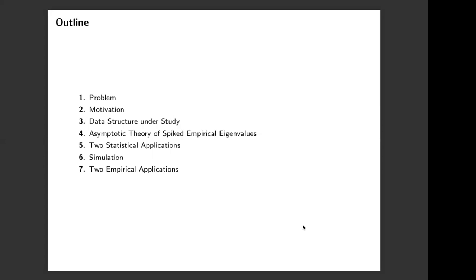This is the outline of my talk. First, I will briefly introduce the problem of PCA on high-dimensional non-stationary data and its motivation. Next, we will focus on data structure and then establish the asymptotic theory for the eigenvalues. We will use the developed theory to choose the statistical application to distinguish the generalized unit root process and the factor model. At last, we will show some simulation and two empirical applications to demonstrate the finite sample performance of our proposed method and proposed statistics.